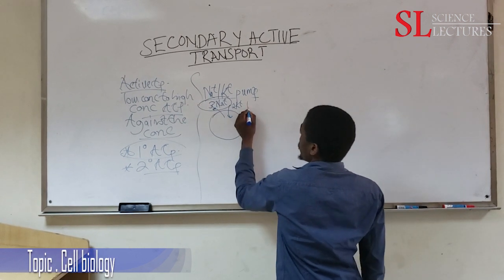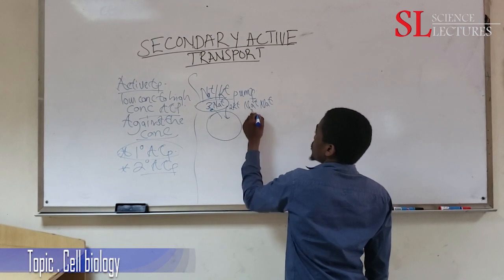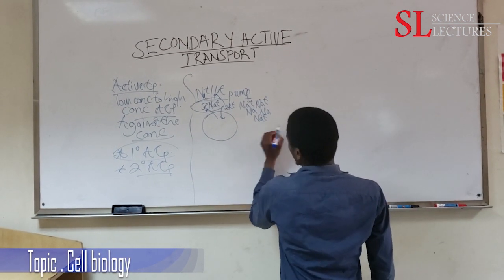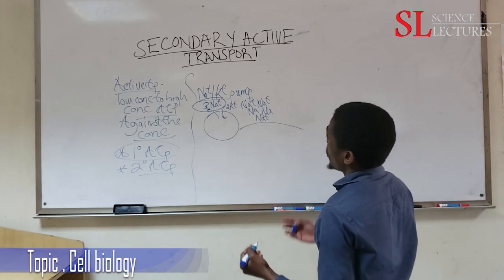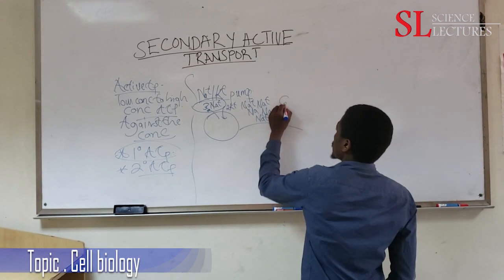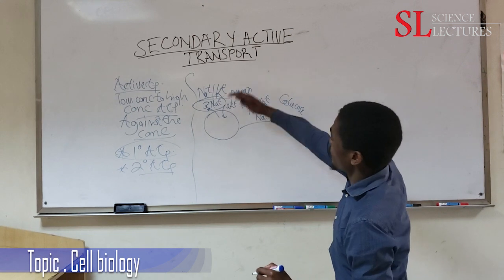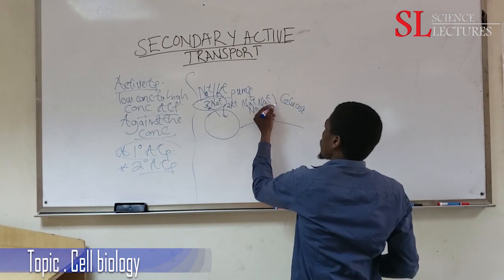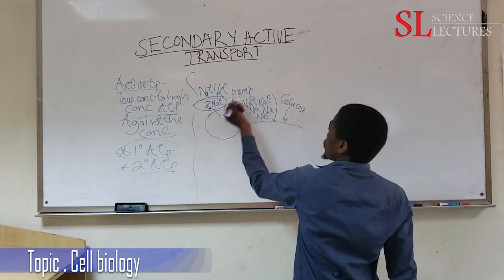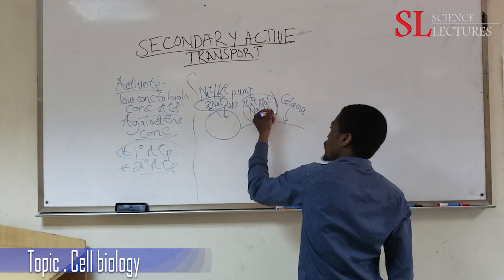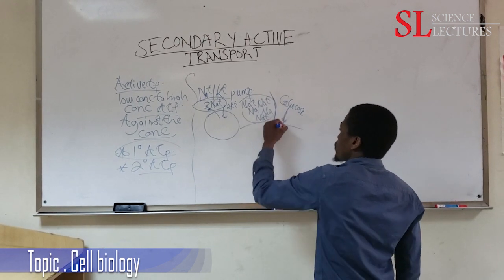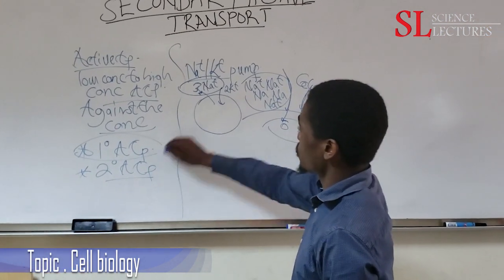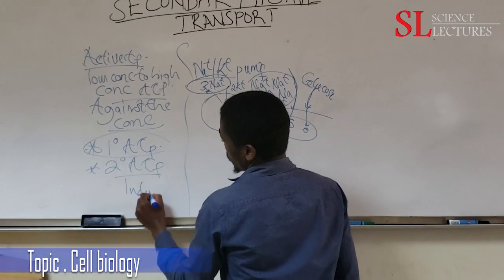When we pump out sodium ions, their concentration increases outside the cell — there are more sodium ions outside at high concentration. In secondary active transport, we use the sodium-potassium pump to aid in the transport of molecules like glucose. In this way, ATP is used indirectly in secondary active transport.